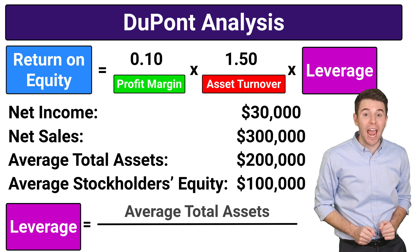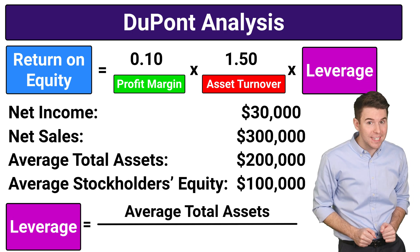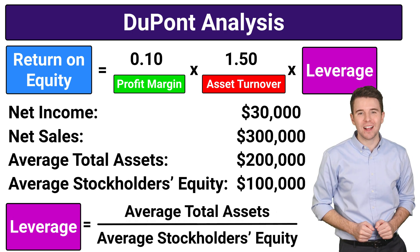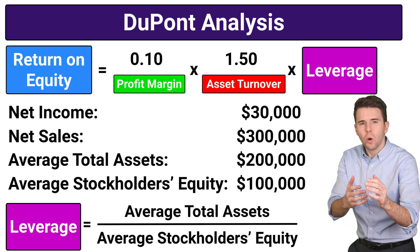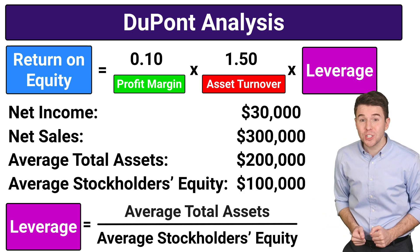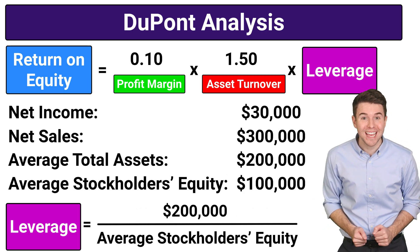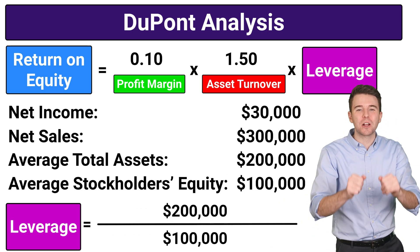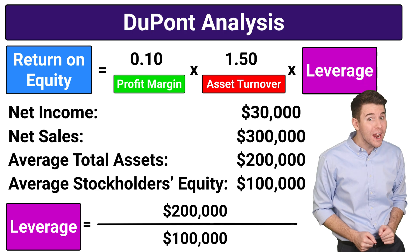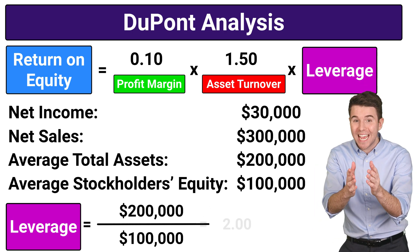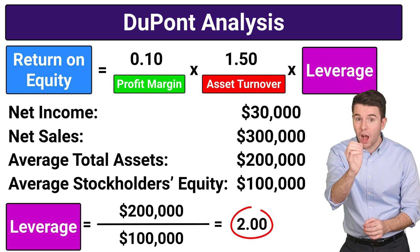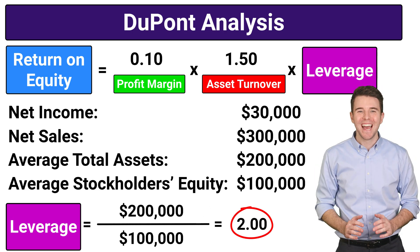Then, Leverage is computed as average total assets divided by average stockholders' equity. So we take average total assets of $200,000 and divide by average stockholders' equity of $100,000, to get leverage of 2.